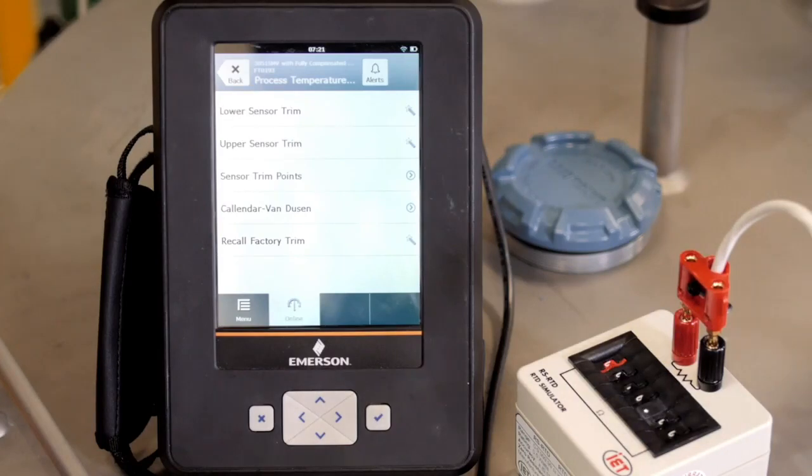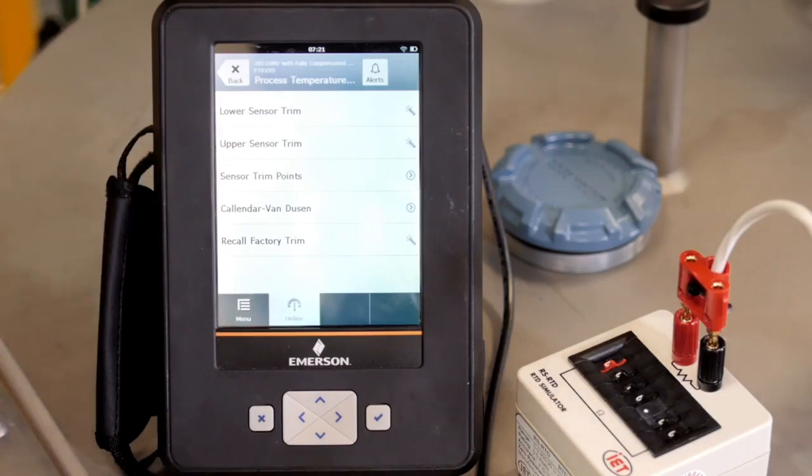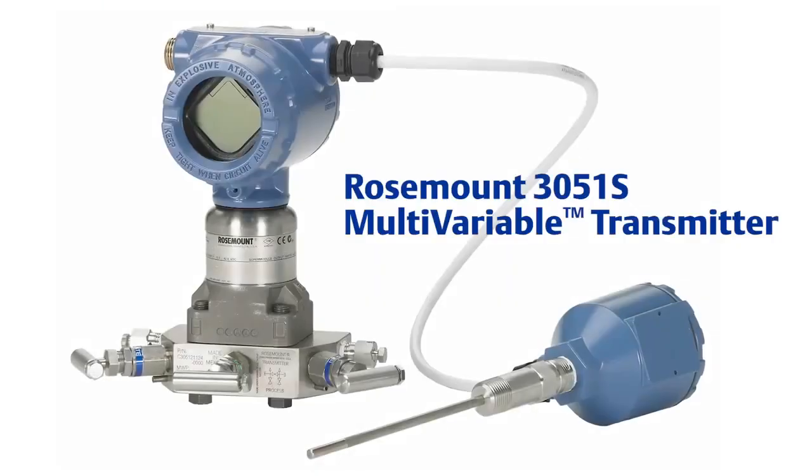From here we can follow the Trex guided wizards for the lower sensor trim and upper sensor trim options. Keep in mind this process calibrates the temperature input on the transmitter and not the RTD itself. Once the lower and upper trims have been successfully performed, the calibration of all three sensors is complete.